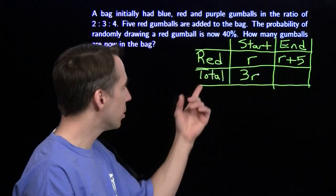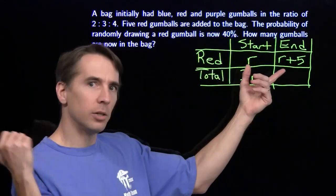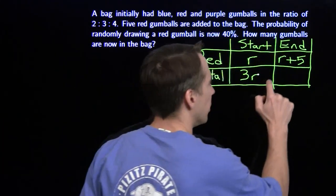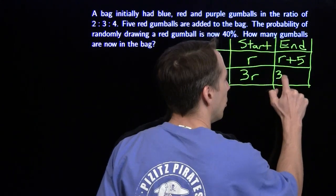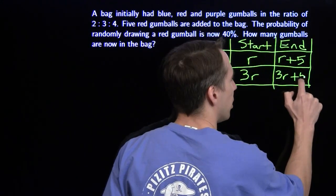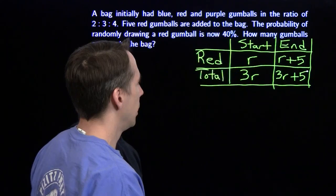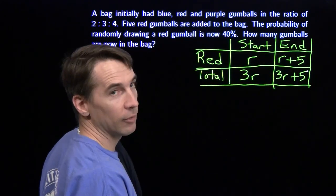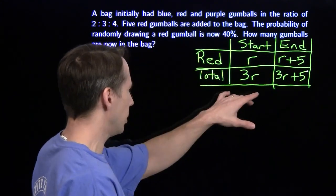All we have left is this last cell here to get from the total at the start to the total at the end. All we're doing is adding those five gumballs. So at the end, we have 3r plus 5. Filled out the table, still don't have our answer, so we're going to have to think about this a little bit more.